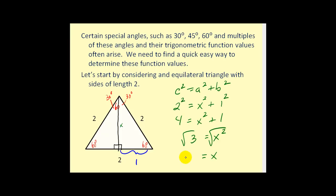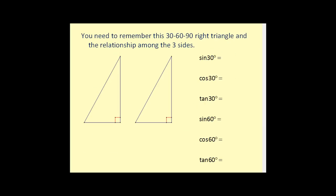So this missing side has length square root of three. That's very important because if we have a right triangle that has a 30 and a 60 degree angle in it, we know that the short side will be equal to one, the hypotenuse will be two, and the other leg will be square root of three. If we have a right triangle with 30 degrees and 60 degrees, we can quickly determine that the hypotenuse has length two, the short leg has length one, and the other leg has length square root of three.